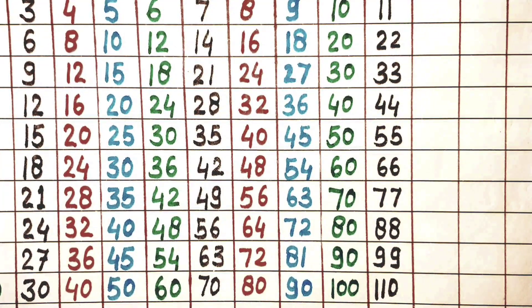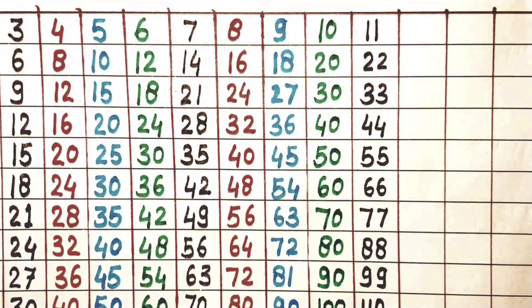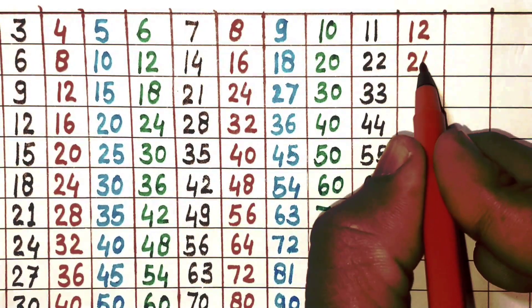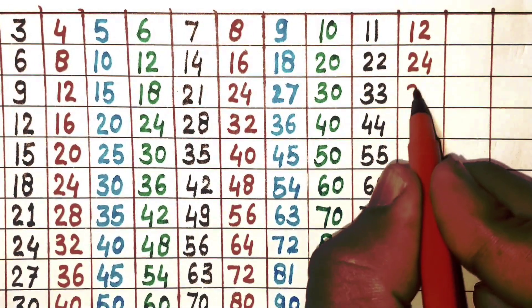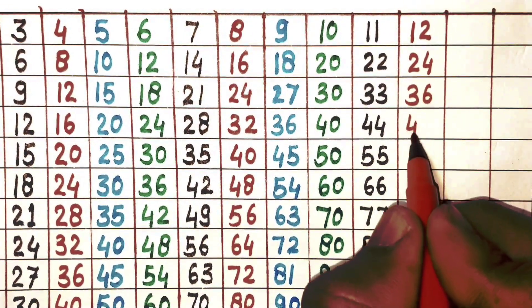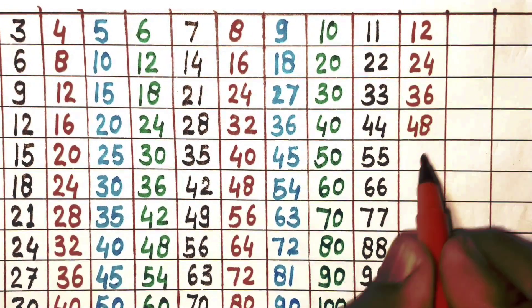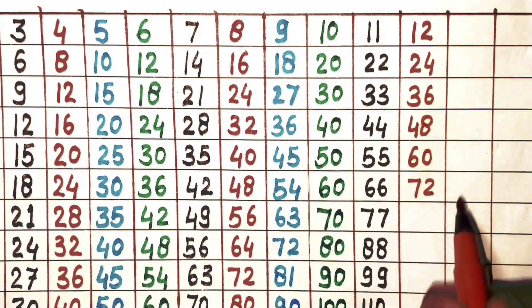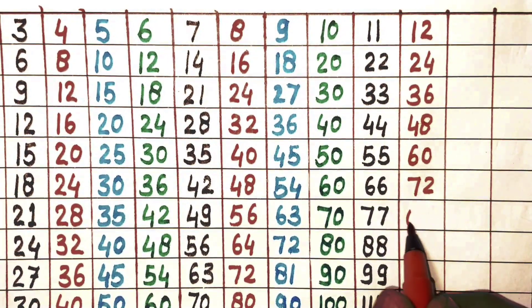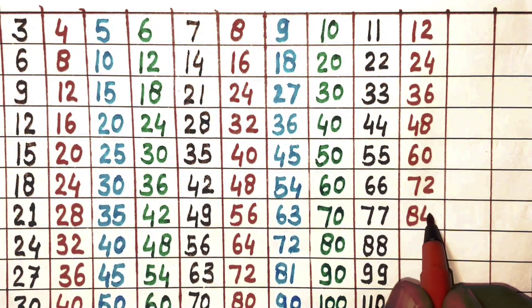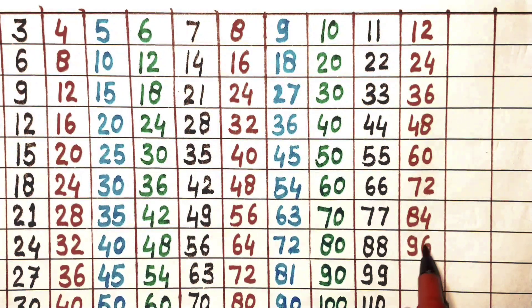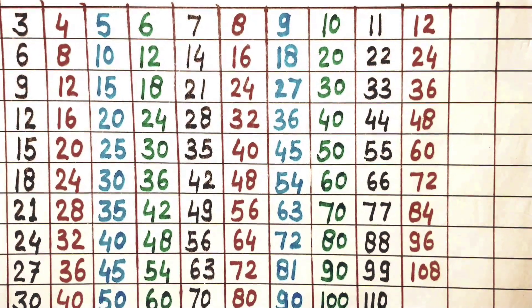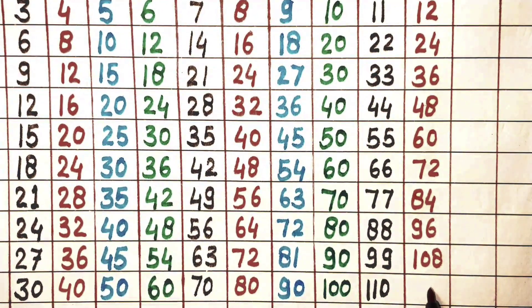Next 12. 12×1 is 12, 12×2 is 24, 12×3 is 36, 12×4 is 48, 12×5 is 60, 12×6 is 72, 12×7 is 84, 12×8 is 96, 12×9 is 108, 12×10 is 120.